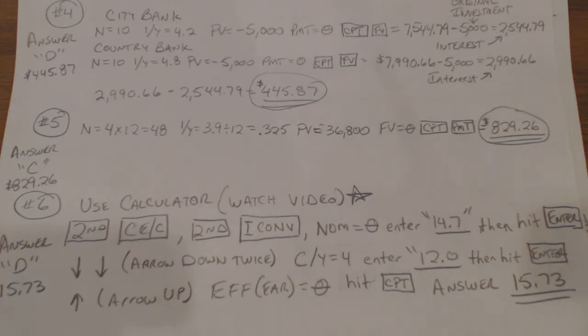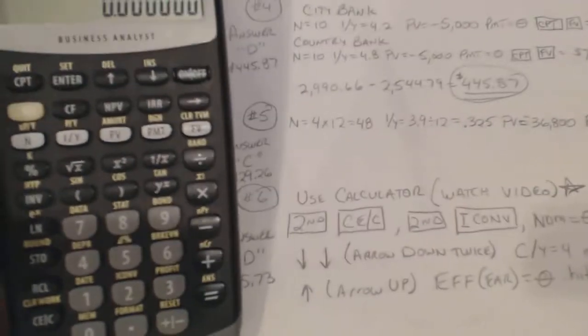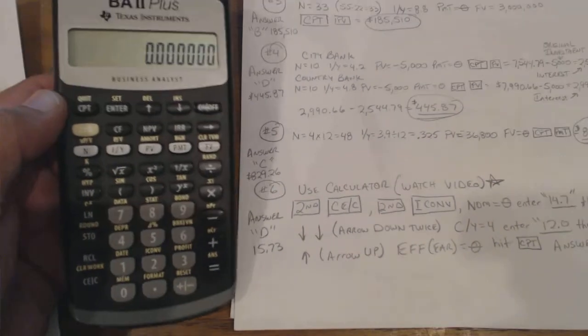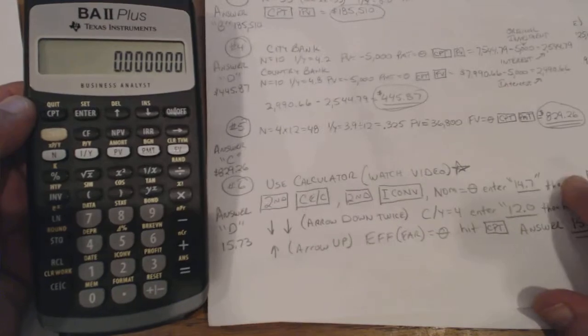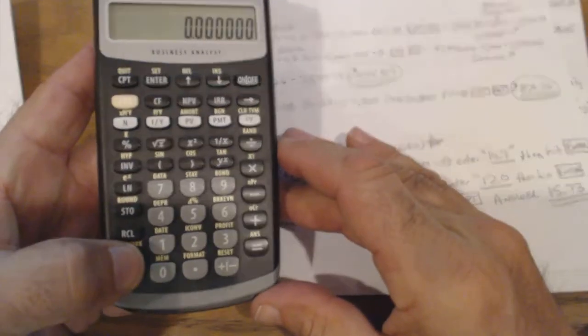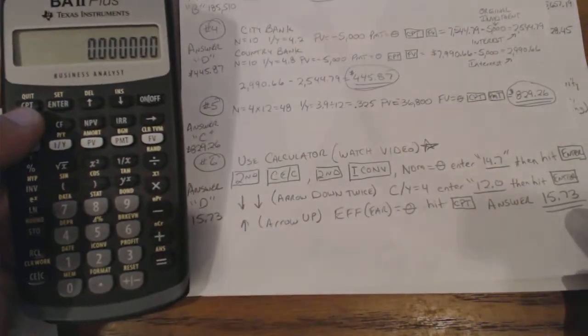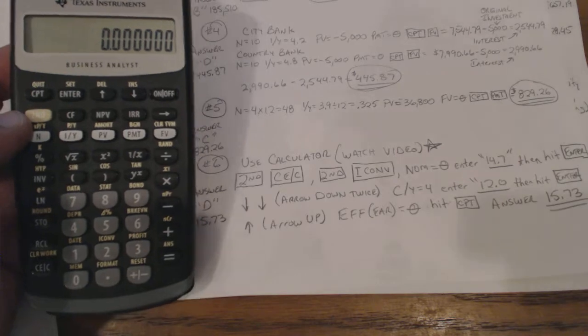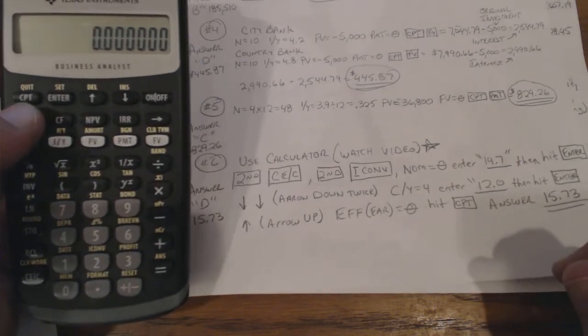In this case, you want the effective annual rate, which is really a compounding rate. But there's a nice feature on your calculator where you can use your calculator to figure that out. For instance, you clear everything first. Make sure you clear it. So it's Second, then CE.